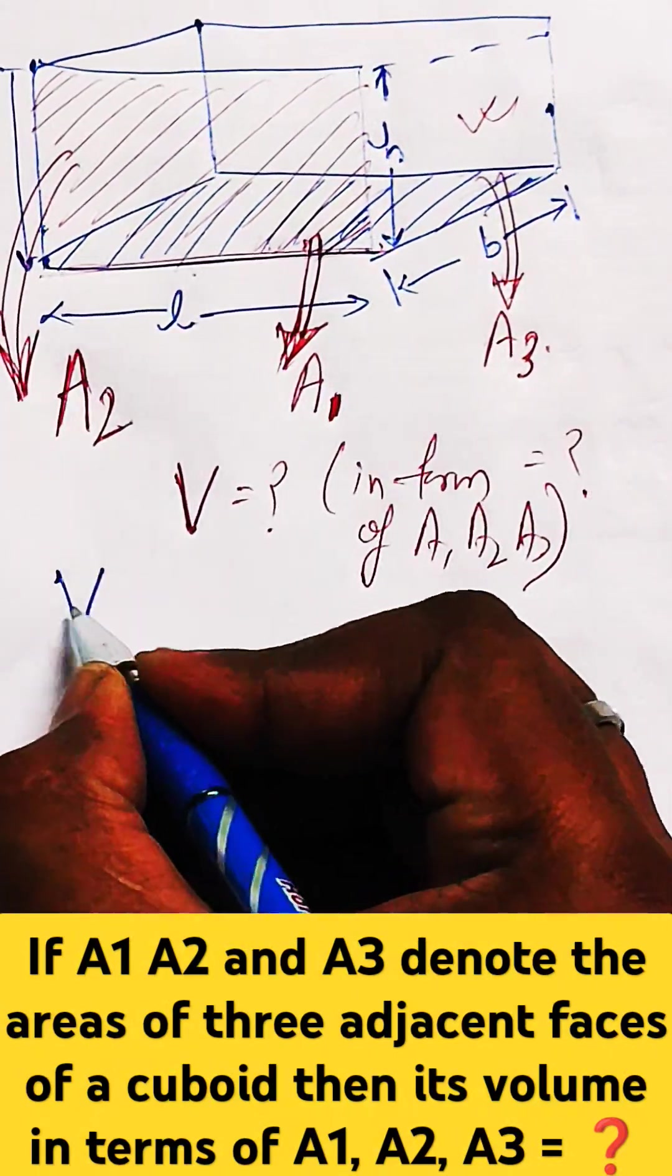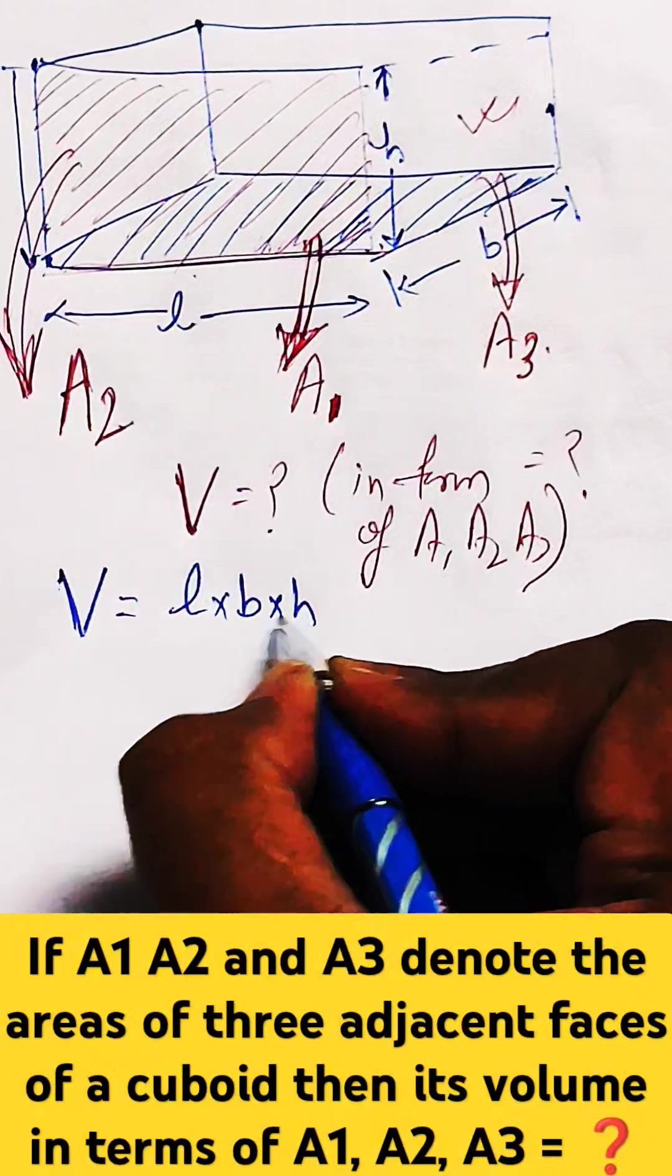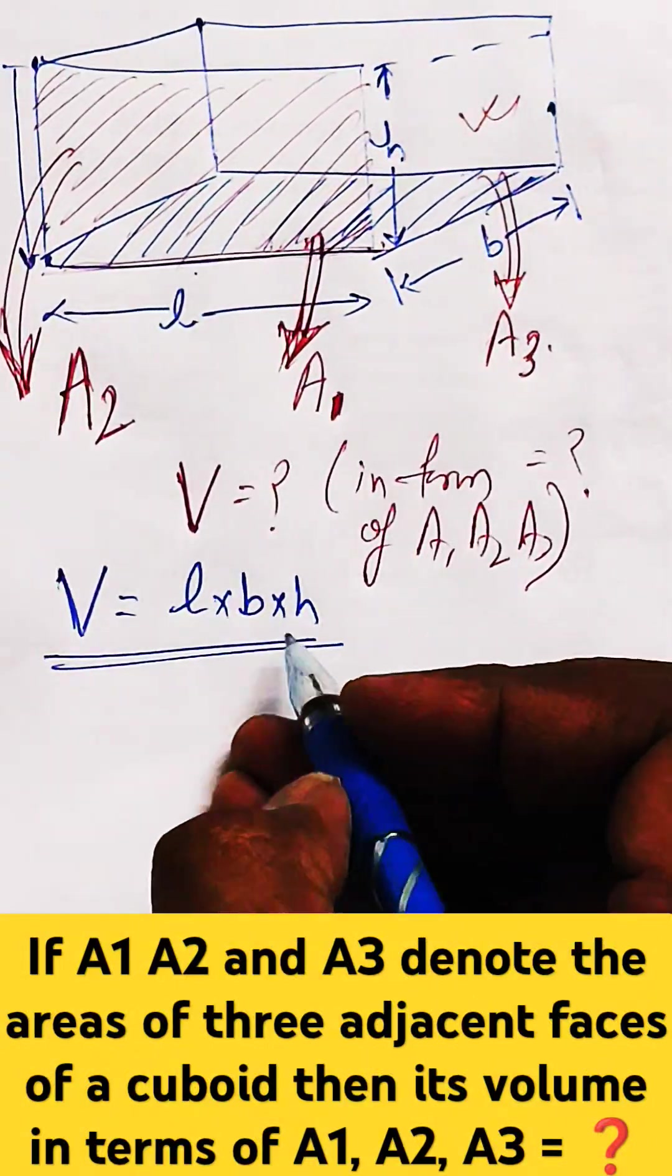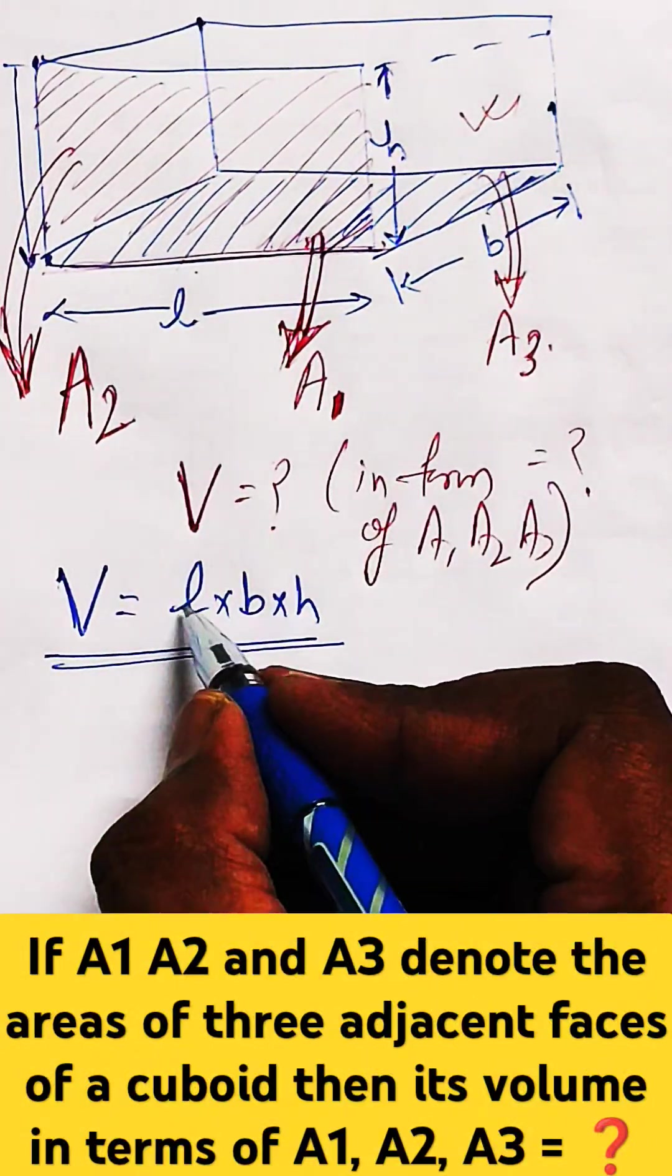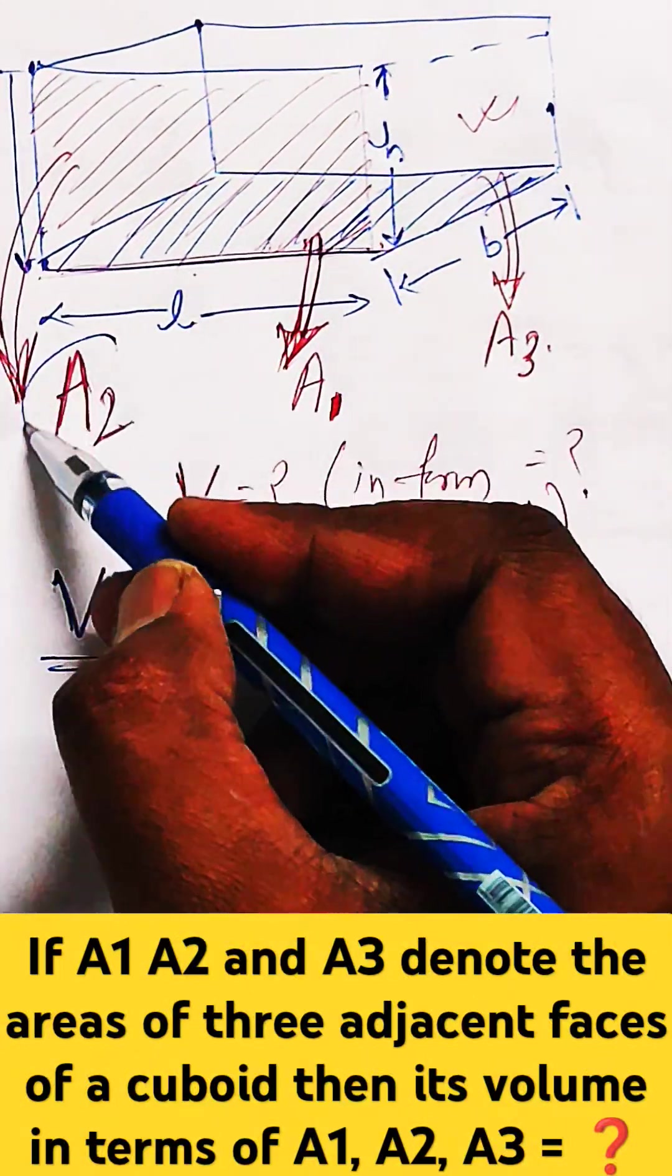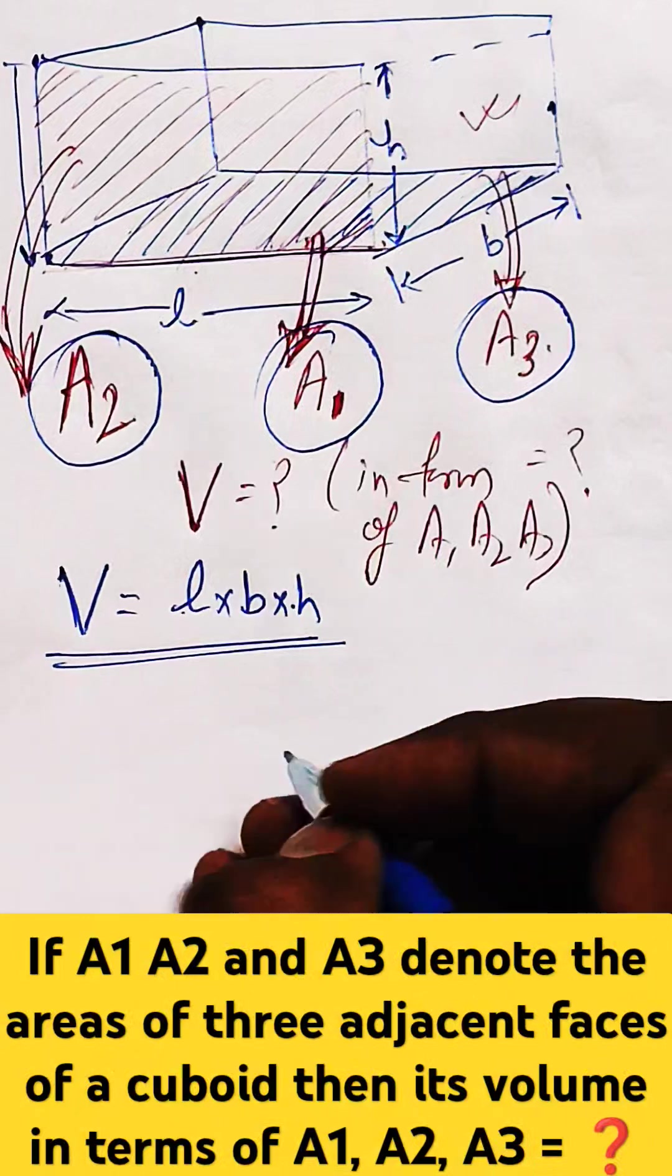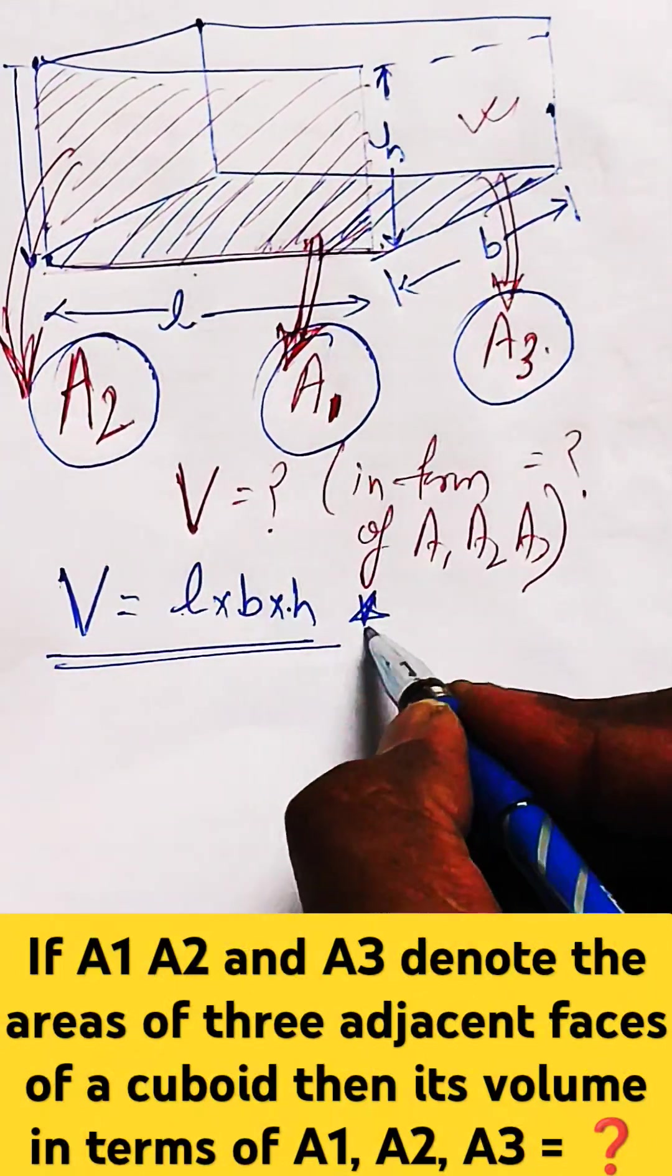Now simply changing the pen, volume of a cuboid is L into B into H. Just remember it. Now what we will do, in place of L, B, H, you can simply write, just multiply A1, A2 and A3, just remember it first.